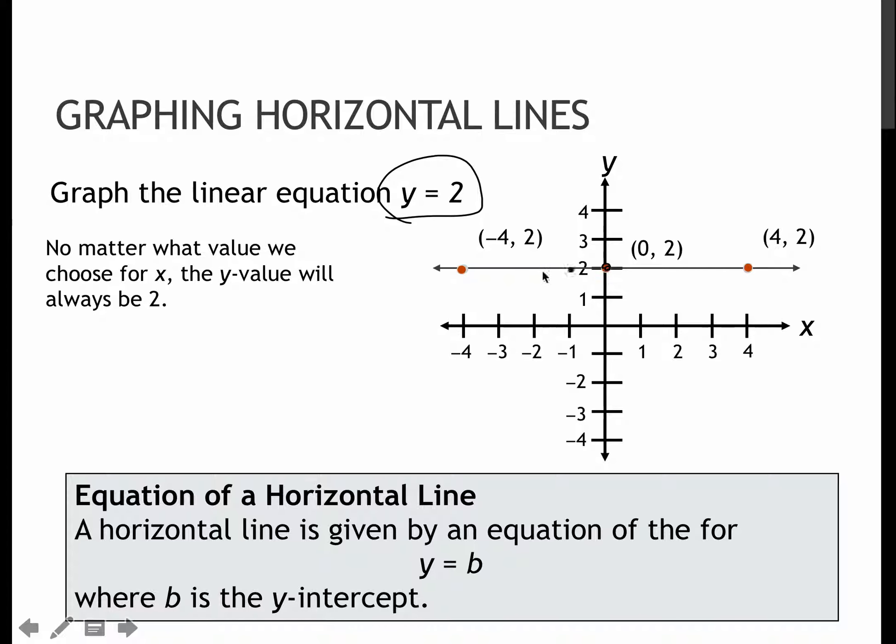Horizontal lines, obviously it makes sense then that that would be a y equals equation instead. So I would go to where y is 2, and then I would draw a horizontal line through that. So any horizontal line is given by y = b, where b is the y-intercept.